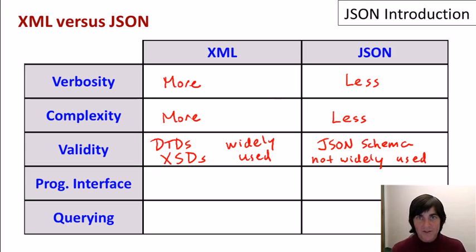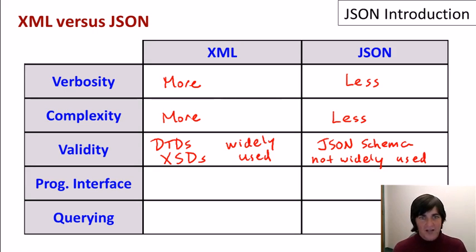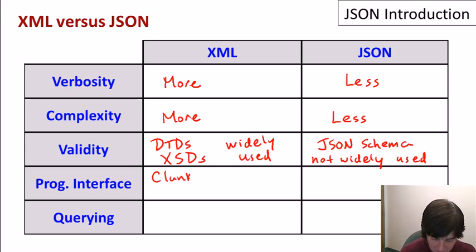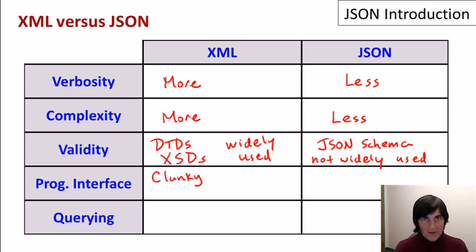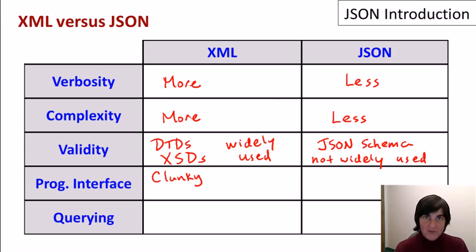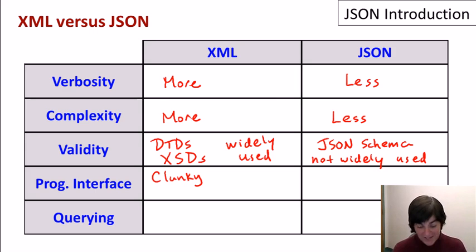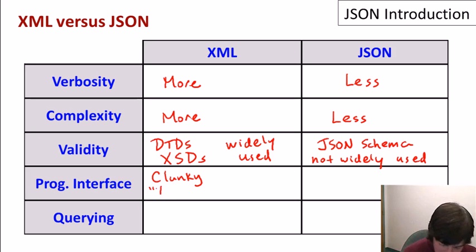Now, the programming interface is where JSON really shines. The programming interface for XML can be fairly clunky. The XML model — the attributes and sub-elements and so on — don't typically match the model of data inside a programming language. In fact, that's something called the impedance mismatch.